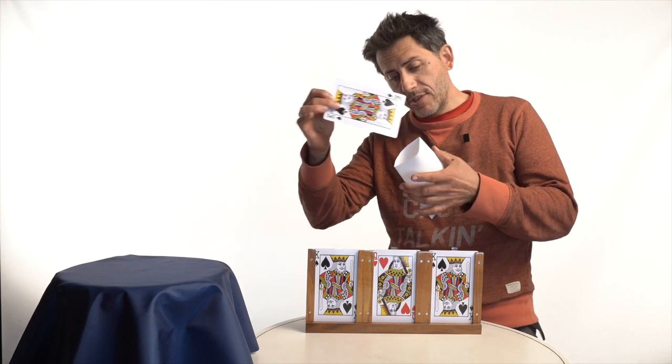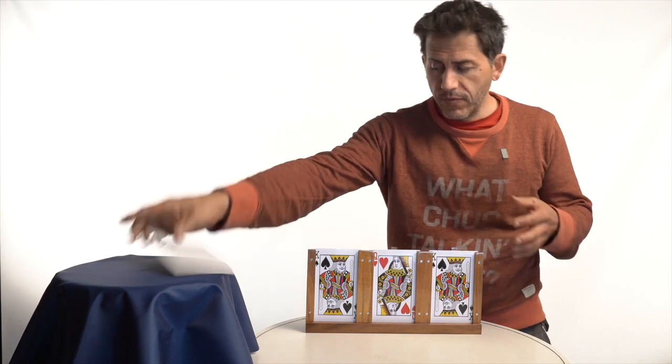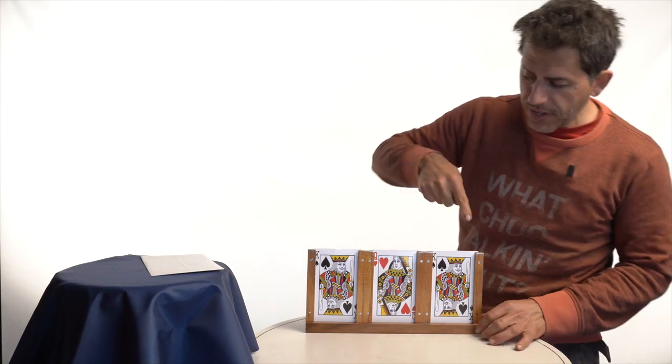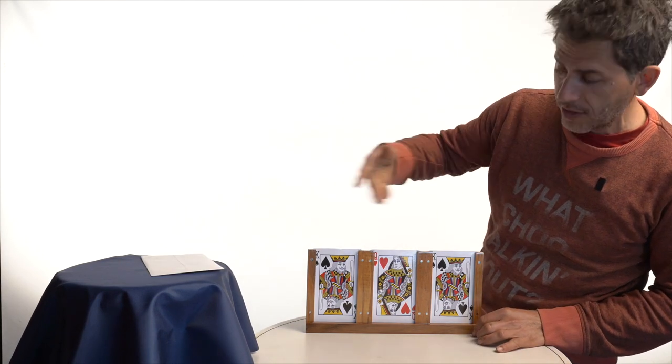Inside this envelope I'll put a black king. I'll leave it right here. Here there are other three cards, two kings and a queen.